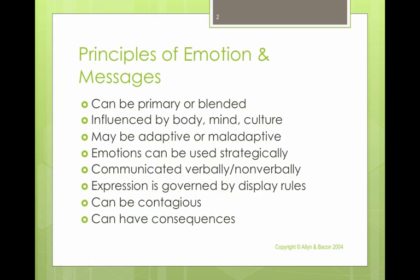Our emotions are governed by display rules — what is and is not permissible emotional communication. For example, it's not appropriate to slap your child in public, punch or slap another person, slam your office door, or roll your eyes at your supervisor. These are display rules; you just don't do those things. If you did, it would have severe consequences and you'd look emotionally unintelligent rather than emotionally intelligent.